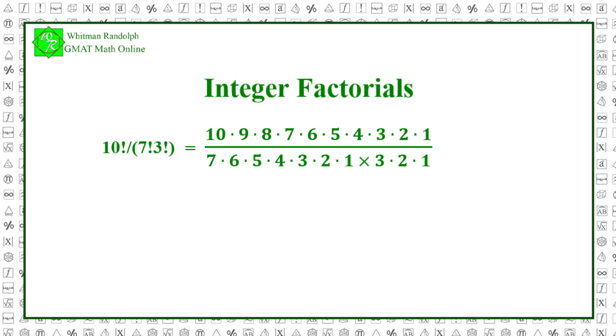First, you cancel out all the factors of 7 factorial and that leaves you with this: 10 times 9 times 8 divided by 3 times 2 times 1.